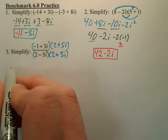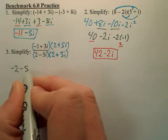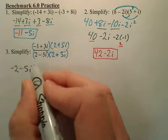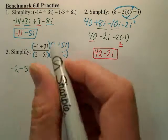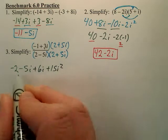When I FOIL the top, I get negative 2, minus 5i, plus 6i, plus 15i squared. You always have an i squared at the end.